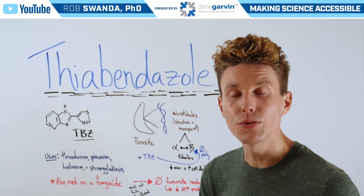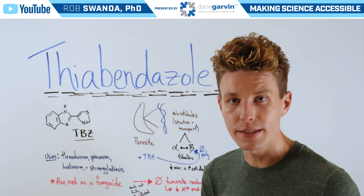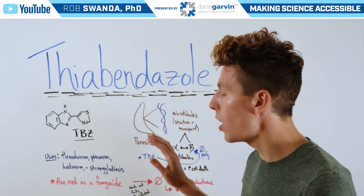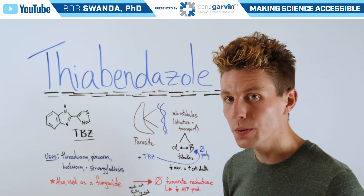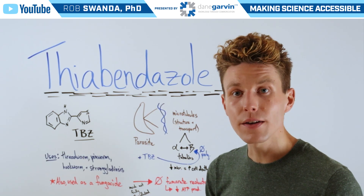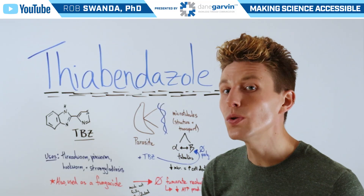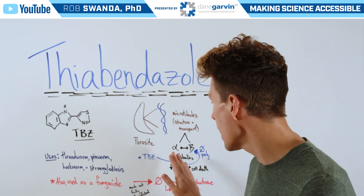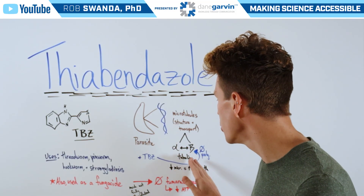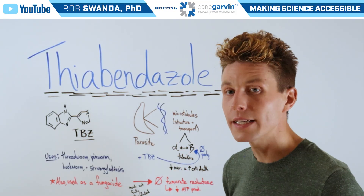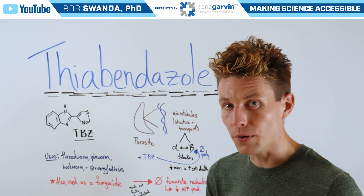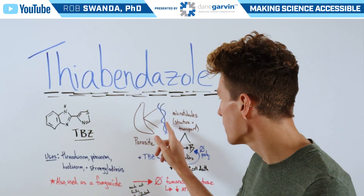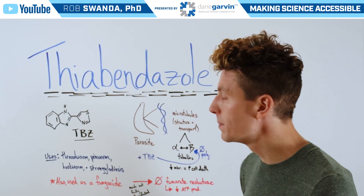Microtubules are necessary for structural support as well as transporting nutrients around the cells. If we zoom in even further on those microtubules, we'll see that they're composed of two subunits known as alpha and beta tubulin, which need to come together — or polymerize — in order to build those microtubules.